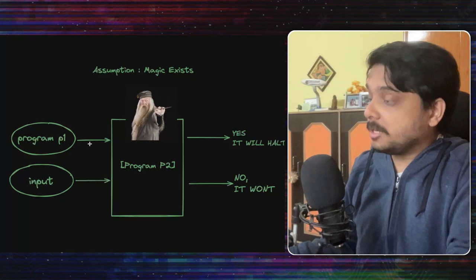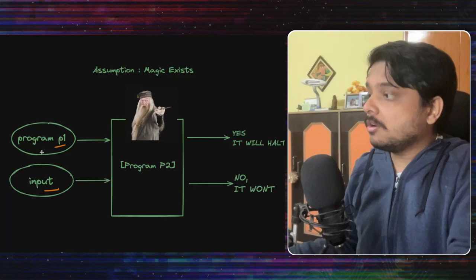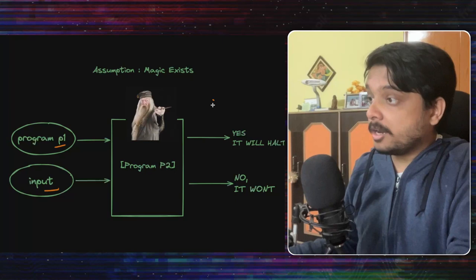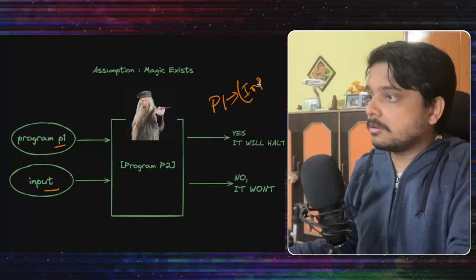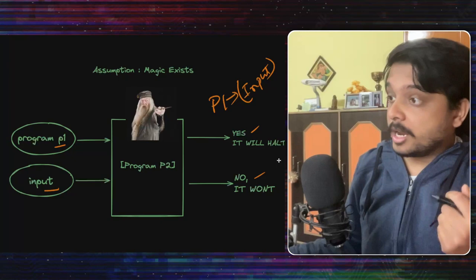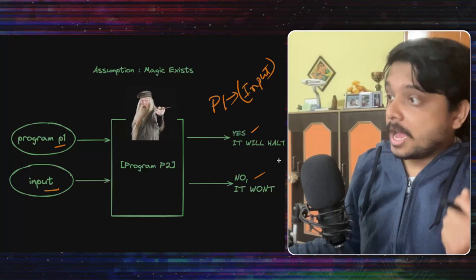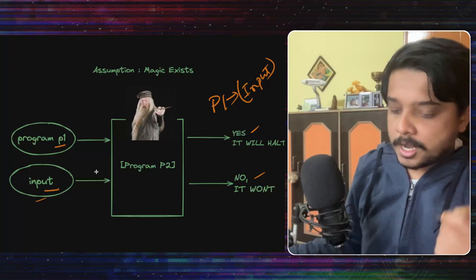That means it takes an input, which is a program and let's call it P1 and it takes the input for that program. And the program tells that when we run P1 with this input, will it halt or it won't halt. So if the program says yes, then P1 on having input will halt. And if it says no, it won't, then P1 on having this input will not halt.